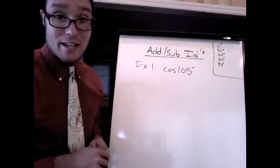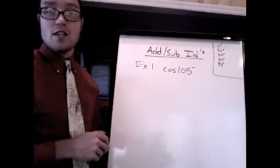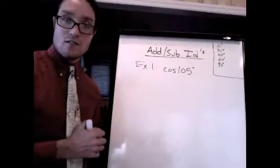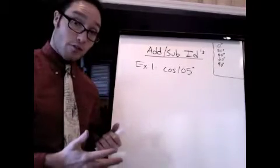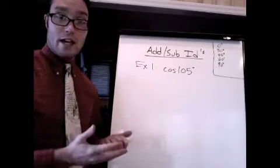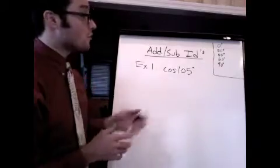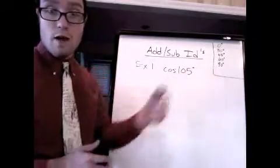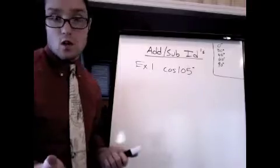Hi, everybody. It's your old friend, Mr. Kennedy. I'm going to teach you how to use the addition and subtraction identities to prove trig formulas and to find trig angles that are different from the famous ones that we already know. We memorize those, right? So here's what you do. I'm going to do an example.